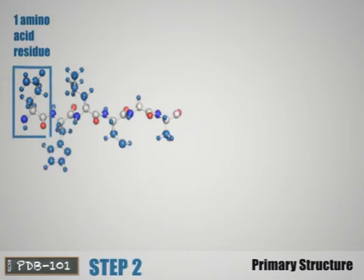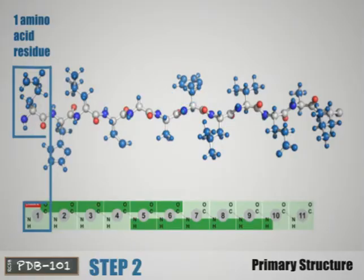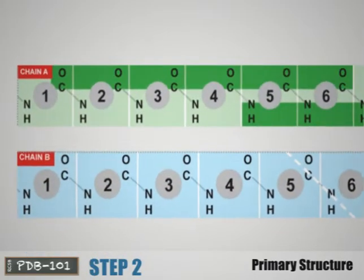Proteins are polymer chains of amino acid residues. Each number on the model represents one amino acid residue. Insulin has two chains. Chain A is green, chain B is blue.